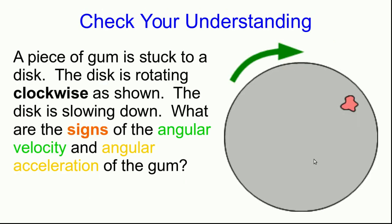Let's check your understanding. Here we have a piece of gum stuck to a disc, and the disc is rotating clockwise. At this moment, the disc is slowing down. All I want you to do is figure out the signs, positive or negative, of the angular velocity and the angular acceleration of the gum. If you're in the course, Moodle will ask you this question before allowing you to go to the next video lecture. If you're not in the course, I still encourage you to decide on what the answer is before you proceed to the next part of this video lecture.